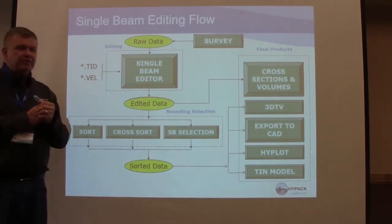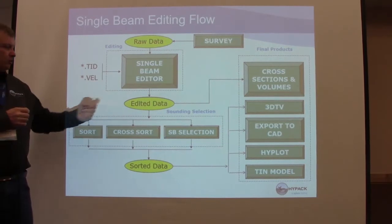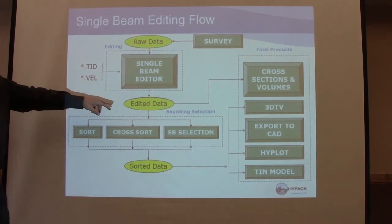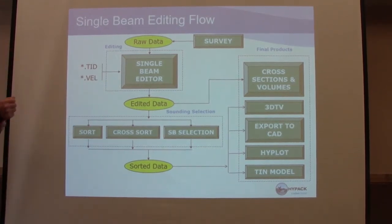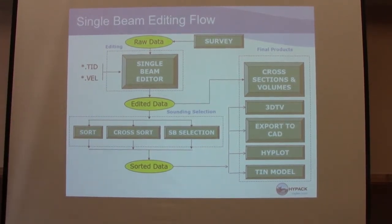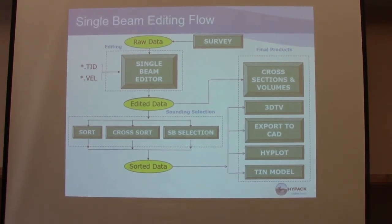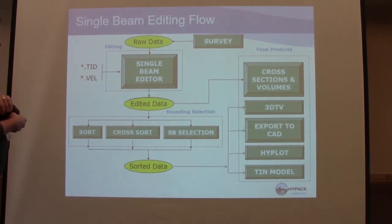Once we have our corrections in there, we create edited data. What you can do with your edited data is sounding selection, or final products straight from your edited data. I'm going to give a TIN model lesson later — that's where we take edited data to do TINs and contours. Sorting your data: sort, cross-sort, and sounding selection.